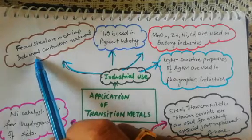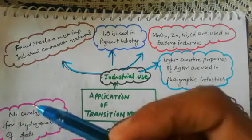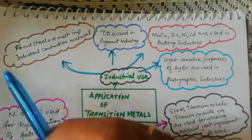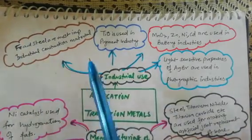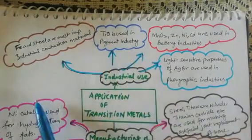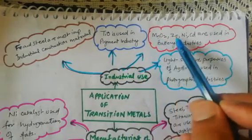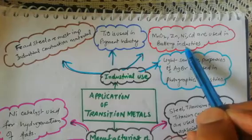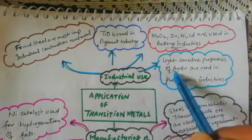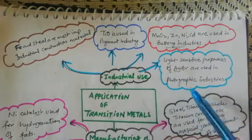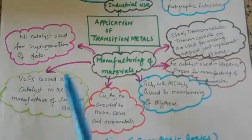Titanium oxide is used in pigment industries for coloring. Manganese oxide, zinc, nickel, and cadmium are used in battery industries. Silver bromide (AgBr), where silver is a transition element, is used in photographic industries due to its light-sensitive properties.